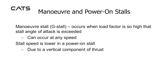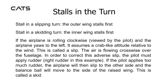Manoeuvre and power-on stalls. A manoeuvre stall (G stall) occurs when load factor is so high that the stall angle of attack is exceeded — it can occur at any speed. Stall speed is lower in a power-on stall due to the vertical component of thrust. Stalls in the turn: in a slipping turn the outer wing stalls first; in a skidding turn the inner wing stalls first.